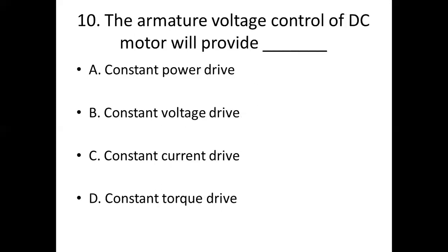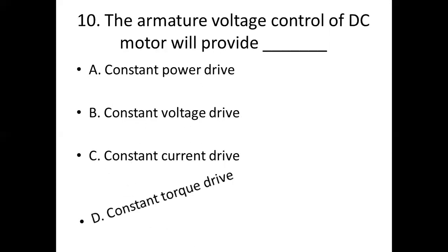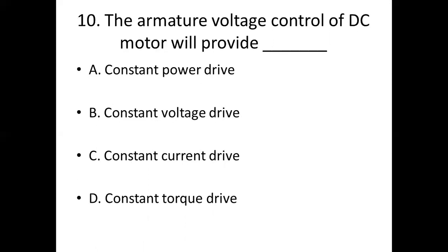Tenth bit. The armature voltage control of a DC motor will provide dash. Option A: constant power drive. Option B: constant voltage drive. Option C: constant current drive. Option D: constant torque drive. Answer: Option D, constant torque drive.